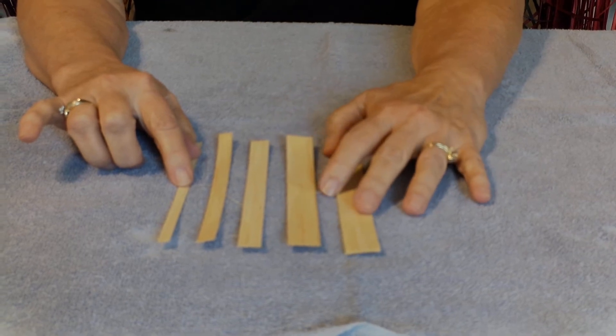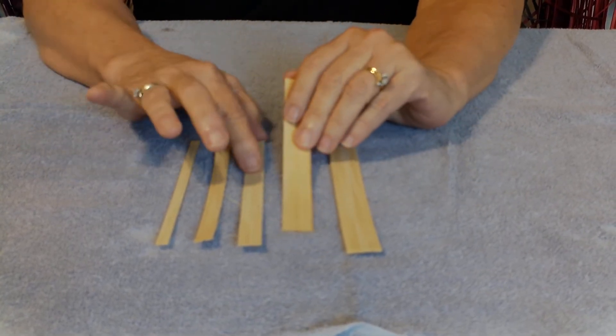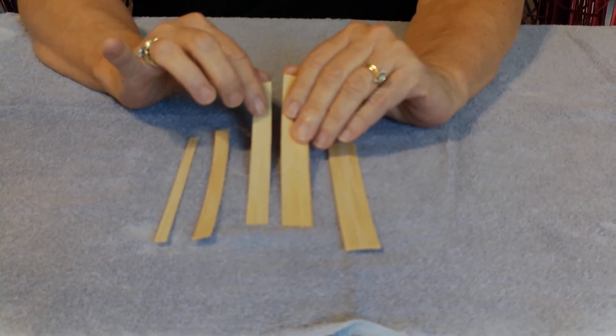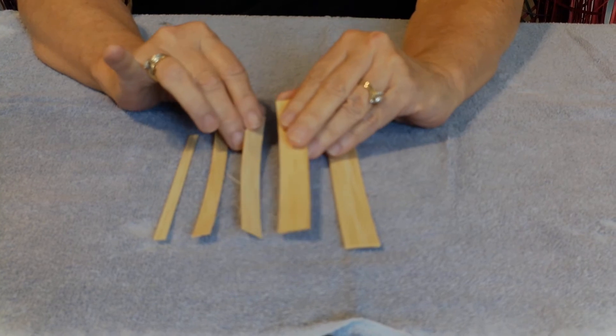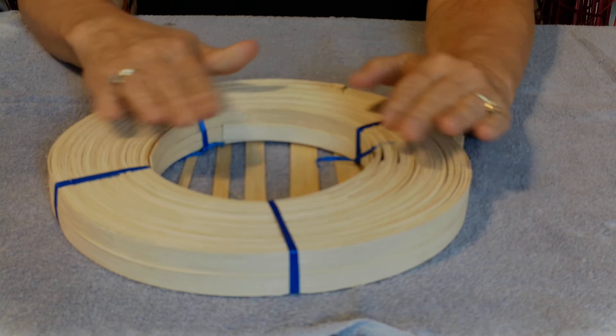So if a pattern calls for X amount of feet of 5-8ths and X amount of feet of half inch, then you can calculate how many baskets you could get out of the one pound coil of reed.